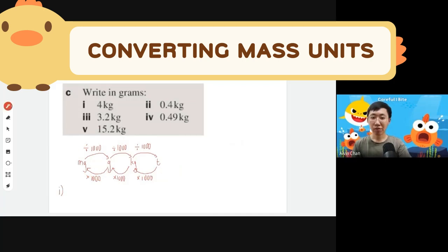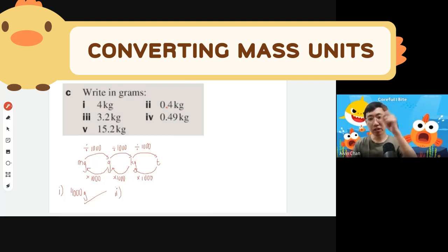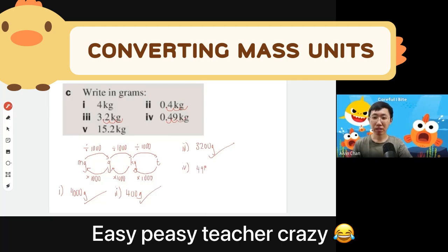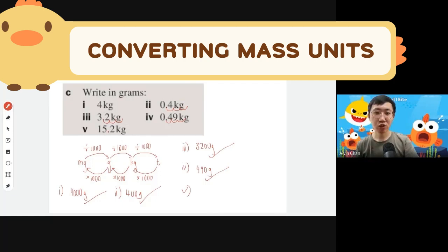Let's practice mass conversions. Question one: convert kilograms to grams — multiply by 1000 — so 4 kg gives 4000 grams. Question two: shift the decimal three places right to get 400 grams. Question three: 3.2 kg to grams — shift decimal right three times — gives 3200 grams. Last one: shift right three places, filling with zeros, gives 15,200 grams.